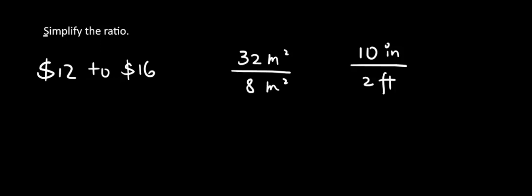Welcome back. In this geometry lesson, we're going to use some Algebra 1 knowledge to simplify the ratio. The first one, we have $12 to $16. First thing we check, they have the same units. And then we start to simplify.